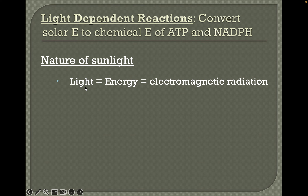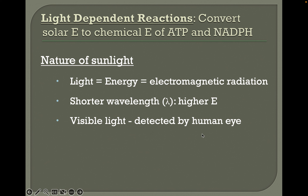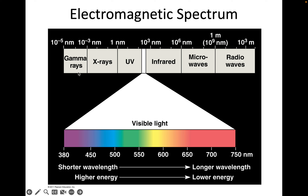Light is a form of energy and a type of electromagnetic radiation. The shorter the wavelength (lambda), the higher the energy it has. Visible light can be detected by the human eye. Light can be reflected, transmitted through something, or absorbed by a surface. In the electromagnetic spectrum, the shorter the wavelength — further left — the more energy something has; the longer the wavelength to the right, the lower the energy. Within the narrow band of light human eyes can perceive, we have shorter-wavelength, higher-energy purple light all the way through the rainbow up to red light, which has the longest wavelength and lowest amount of energy of visible light.